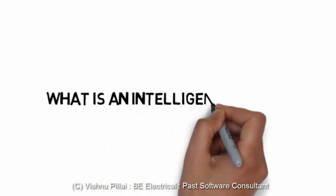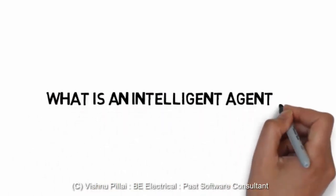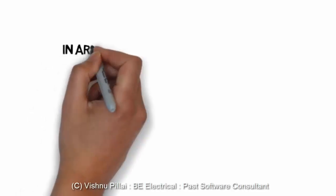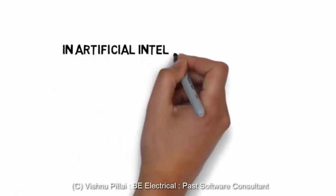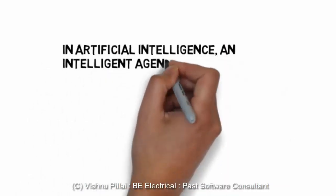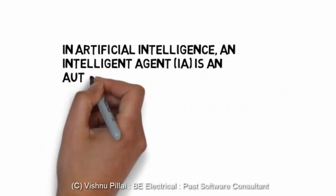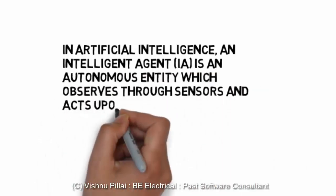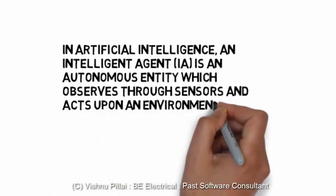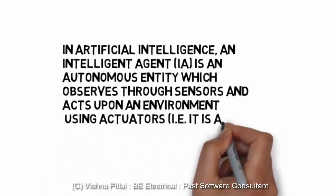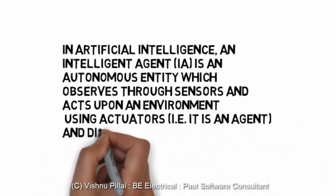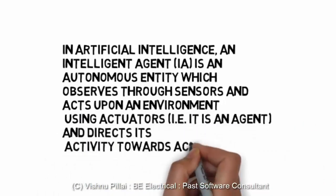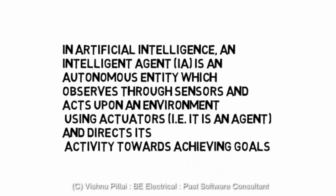Artificial intelligence systems are also known as intelligent agents. When you talk about an intelligent agent, it consists of an agent and an environment. In artificial intelligence, an intelligent agent is an autonomous entity which observes through sensors and acts upon an environment using actuators — that is, an agent — and directs its activity towards achieving goals.